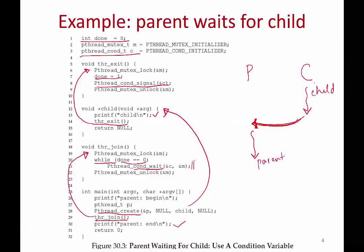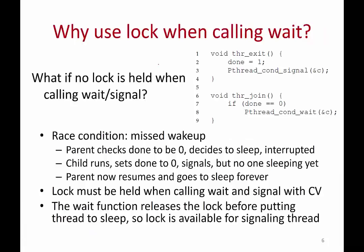There is another subtle point: a lock is held and passed to the wait function, and a lock is also held when signaling. Why do we need a lock here when there's no shared counter being updated? Consider what happens if you don't hold a lock. You can have a race condition even in this sleeping and waking-up process. Suppose the parent checks the condition and decides to sleep, but is interrupted just before it actually sleeps. At that unfortunate moment the child runs.